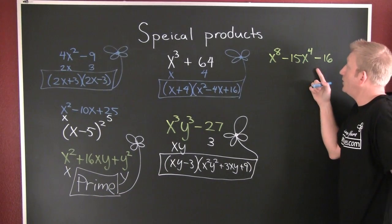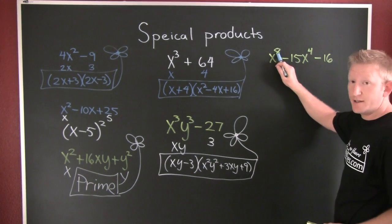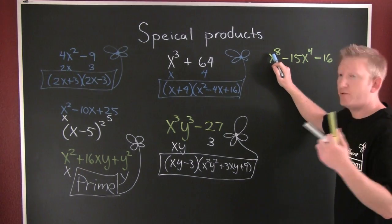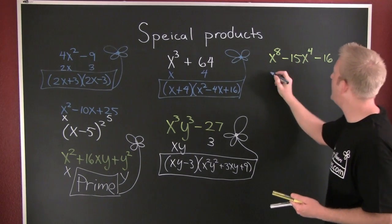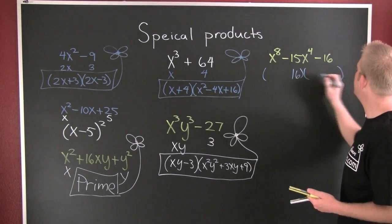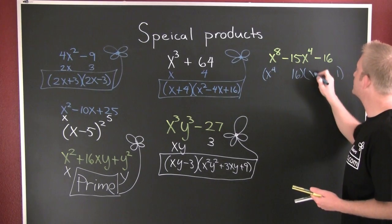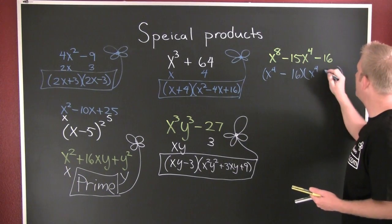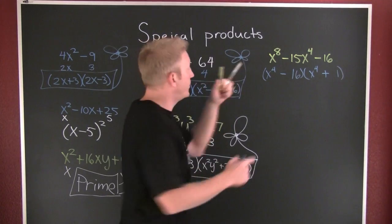Which one is this? This is kind of special — it's of the form where the power is twice that power and you have a trinomial. Do I have any factors of 16 that subtract to be 15? Yes — 16 and 1. So you get x⁴ with different signs, the big one's negative, giving negative and positive factors.